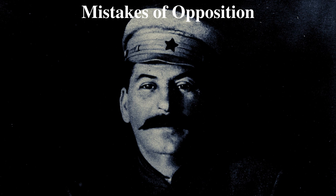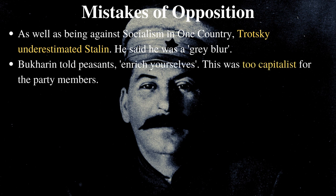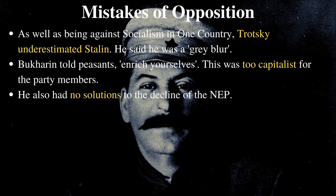While Stalin was undoubtedly a gifted politician, it's also worth pointing out the mistakes of his opponents. Trotsky's support of a global communist revolution has already been noted, but he also made the mistake of underestimating Stalin, referring to him as a 'grey blur' — he simply didn't see Stalin as a threat. Bukharin, who was on the right wing of the Bolshevik party, used the phrase 'enrich yourselves' when appealing to the peasantry during the era of the NEP. This was frowned upon by the majority of Bolsheviks, who saw Bukharin as a capitalist sympathiser. What's more, when the NEP started to fail, Bukharin didn't come up with any solutions — Stalin's answer was rapid industrialisation, but Bukharin had nothing.